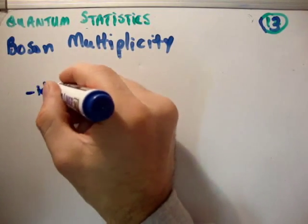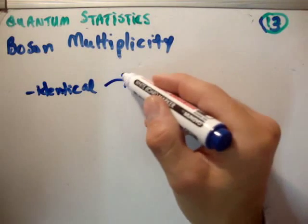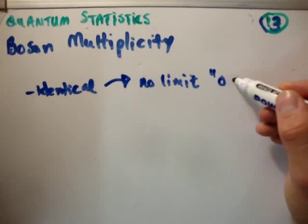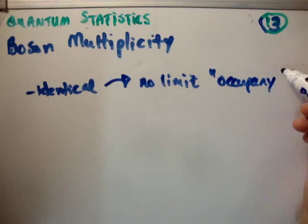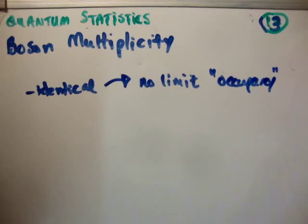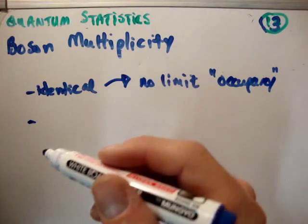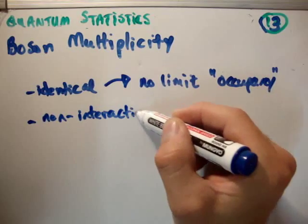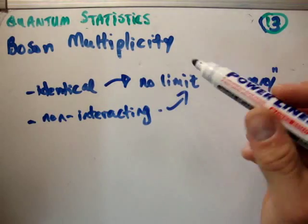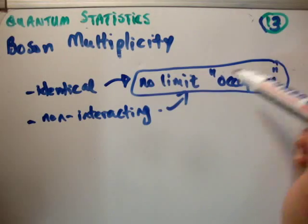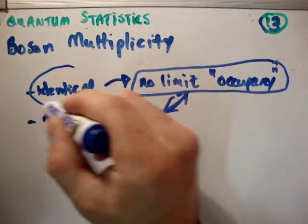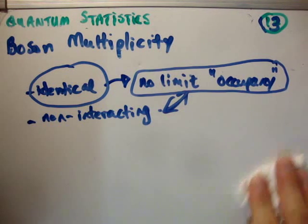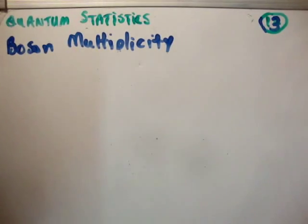Bosons are identical. Because they are identical, we should know at this stage that there is no limit on the occupancy of a state. There is no limit on the occupancy, and also they are non-interacting. That's important. Sorry, I'll take that back. There's no limit on the occupancy because they're non-interacting. The fact that they're identical reduces the multiplicity from the distinguishable case by quite a good bit.